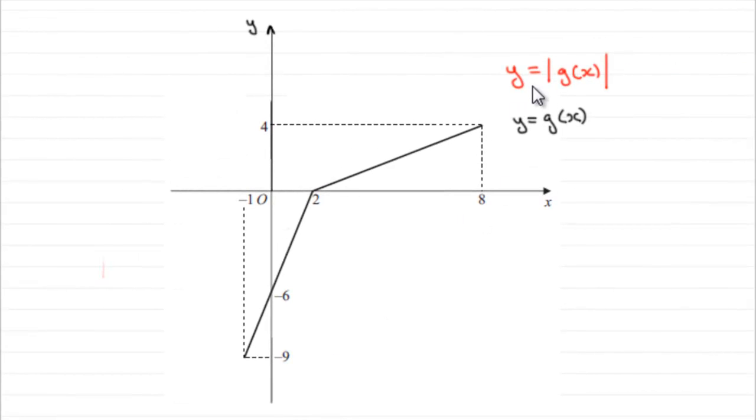Now for this part we've got to draw the graph of y equals the mod of g of x, and we've got g of x as being this graph here. So what does the mod do to this graph?